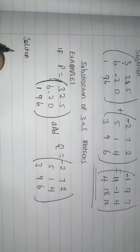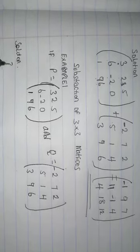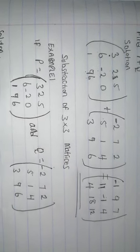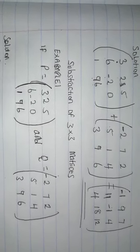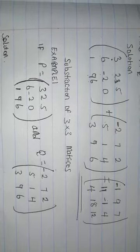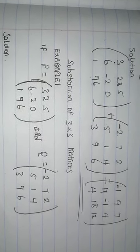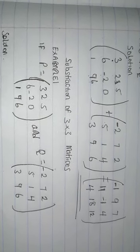And let us go direct to our solution. So I will take my first matrix with 3, 2, 5, 6, negative 2, 0, 1, 9, 6.